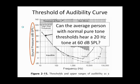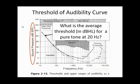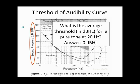Can the average person with normal pure tone thresholds hear a 20 hertz tone at 60 dB SPL? If we presented through the earphones a tone at 60 dB SPL, would a person with average normal hearing be able to detect it? The answer is no, because a 20 hertz tone at 60 dB SPL would be below the average threshold — it would be inaudible. What is the average threshold in dB HL for a pure tone at 20 hertz? The answer is 0 dB HL.